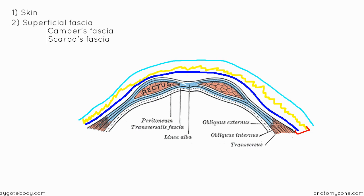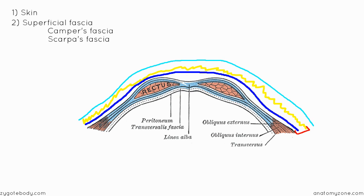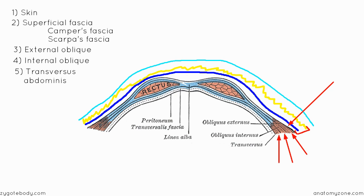After the superficial fascia, it depends on where you're placing the needle. If we're going through the lateral part of the abdomen, we next pass through the muscles: the external oblique, internal oblique, and transversus abdominis. If we're cutting through the middle, we'll pass through the aponeuroses of these muscles, or through the rectus sheath and rectus abdominis muscle if we go through there.